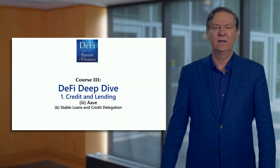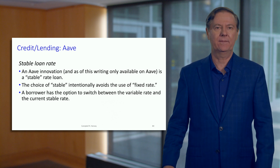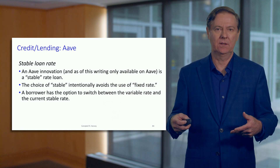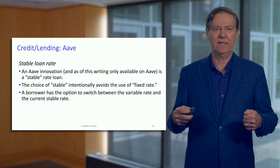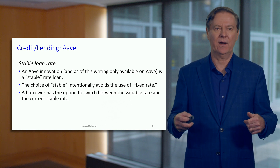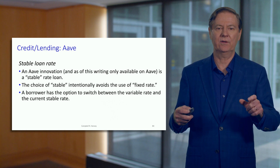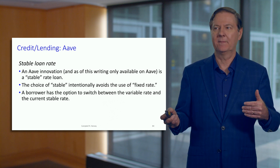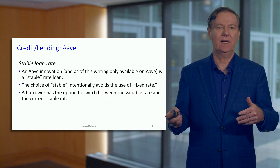The second thing I'd like to talk about with Aave is stable loans and credit delegation. Aave offers something that is more stable than, let's say, Compound, but it isn't fixed. You can think of a fixed rate loan — a mortgage might be a fixed rate, or you could have a variable rate mortgage. But we're not talking about fixed rates; we're talking about stable rates. The borrower has the option to switch between a variable rate and the current stable rate.